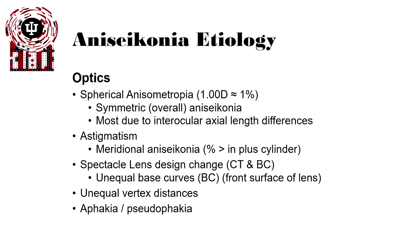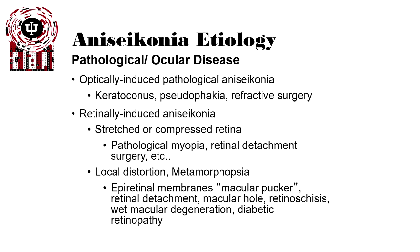Unequal vertex distances between the two eyes can also induce anisoconia, because vertex distance defines magnification. Finally, aphakia or pseudophakia can also cause anisoconia optically. Intrinsic anisoconia is typically caused by pathological ocular disease — for example, keratoconus, pseudophakia, or some refractive surgeries.